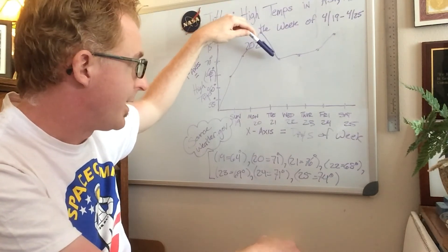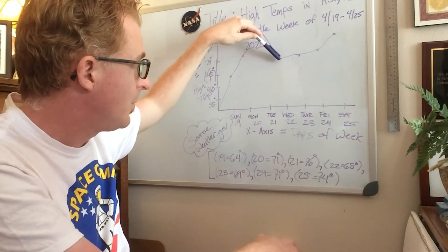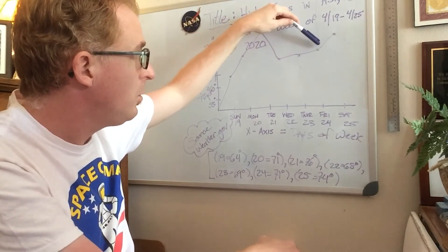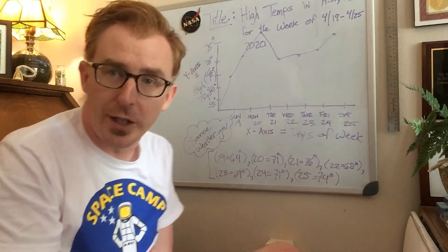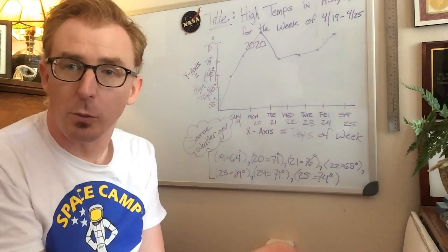Where then midweek we had a drop of temperature on Wednesday the 22nd, where we had it dip down to 68. But then a slow increase climb towards Saturday with 74 degrees going into the weekend.